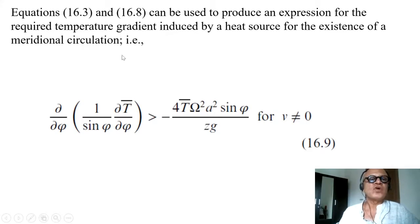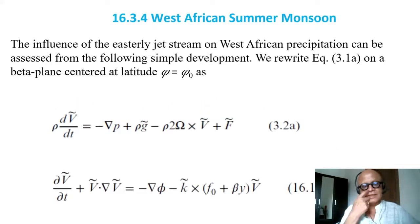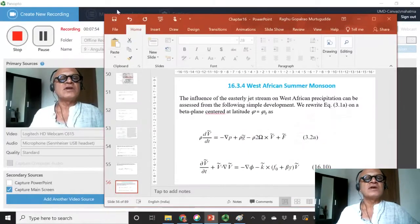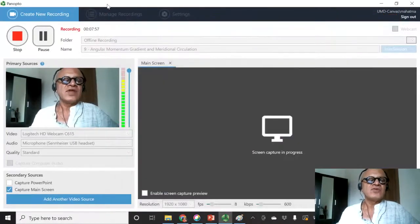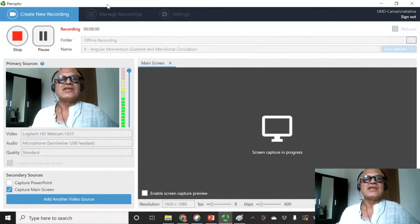Using those equations, we can produce an expression for the required temperature gradient induced by a heat source for the existence of a meridional circulation, which looks like: d/dφ of (1/sin φ) dT̅/dφ = -4Td̅Ω²a² sin φ/gz. For meridional velocity not being zero, it's a nice argument with simple models to show that heating off the equator can drive direct thermal meridional circulation when it is strong enough.